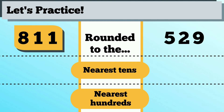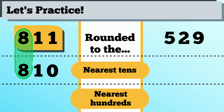Let's practice with 811. To round this to the nearest tens, we look at the ones place. Since the digit is 1, we round the number down to 810. If you have any digits in larger place values than where you're rounding to, they stay the same — that's why our answer is 810. Now rounding 811 to the nearest hundreds, we look at the tens place. Since the digit is 1, we round the number down to 800.